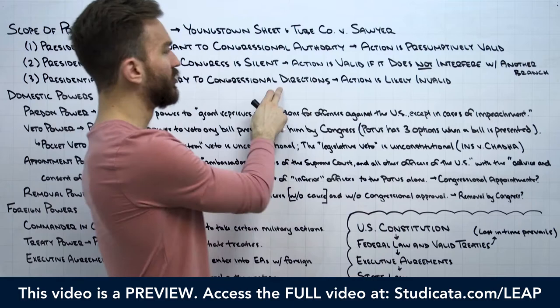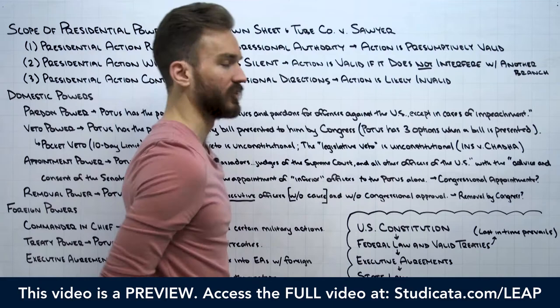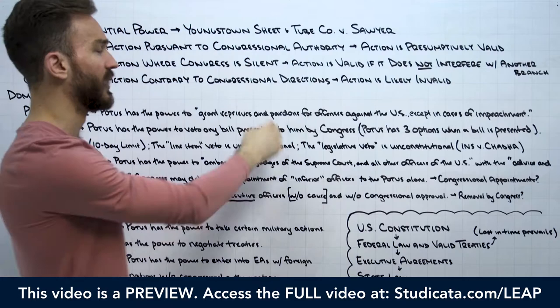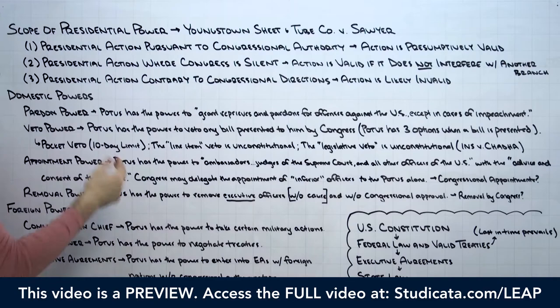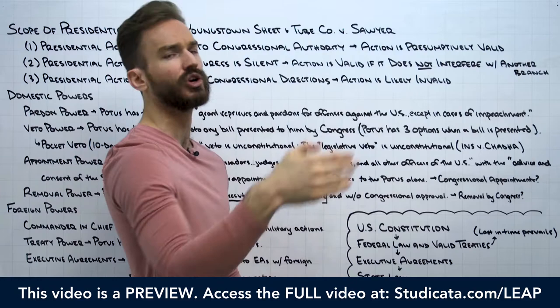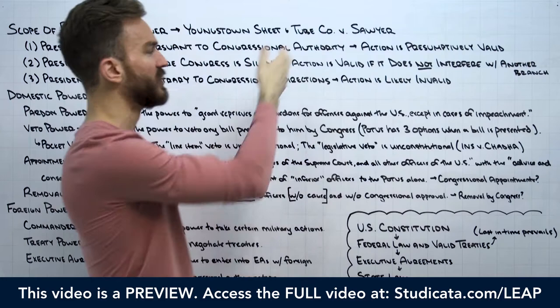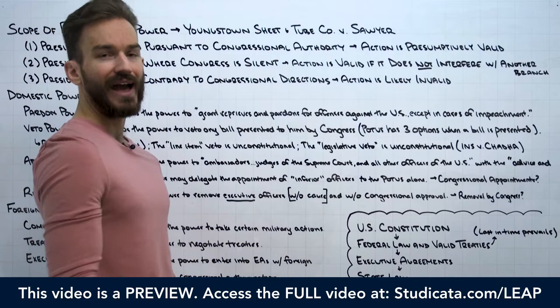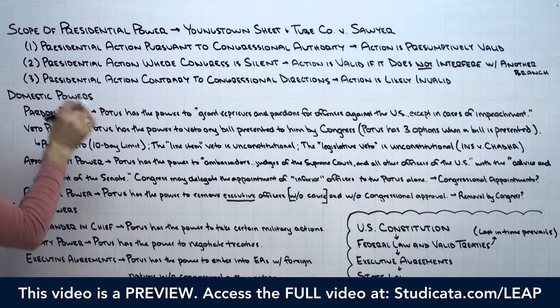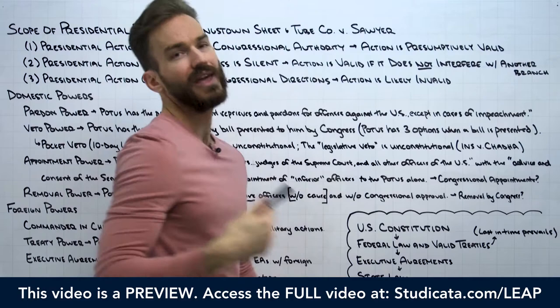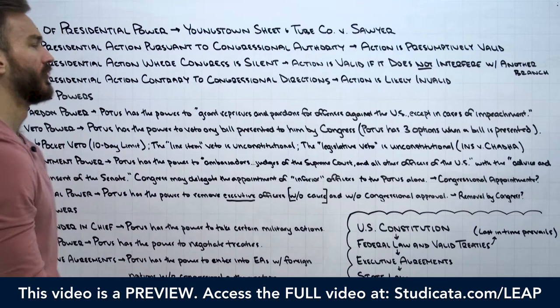Justice Jackson notes that in Youngstown, the president was acting contrary to congressional directions — in direct conflict with something Congress had said. Earlier, Congress had passed the Taft-Hartley Act, which laid out an 80-day procedure the president was supposed to follow when there was a concern of a strike and labor dispute. The president ignored that act, even though he knew about it — he had vetoed it. So he was acting in direct conflict with a law passed by Congress, making his action likely invalid and outside the scope of his power.